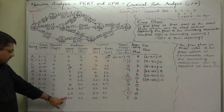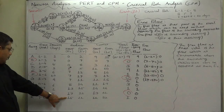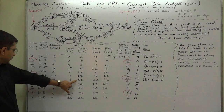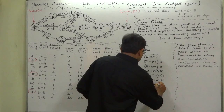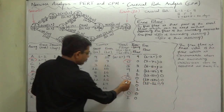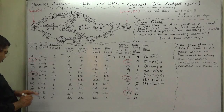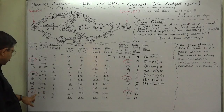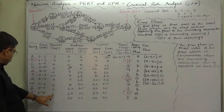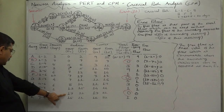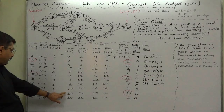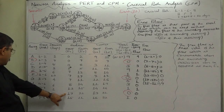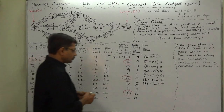For activity G, the succeeding activity is K. Earliest start time of K is 15 and earliest finish time of G is 11, so 15 minus 11 equals 4. Note that 4 plus 1 comes to 5. For activity H, its successor is J. Earliest start time of J is 17 and earliest finish time of H is 14, so 17 minus 14 equals 3.